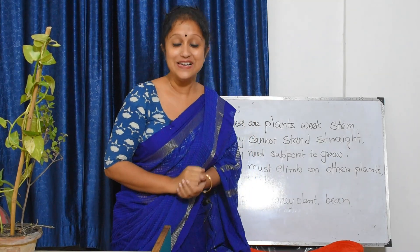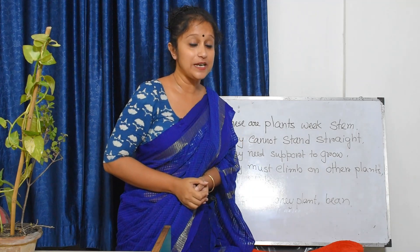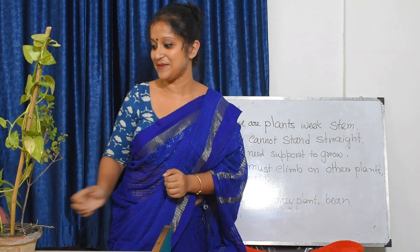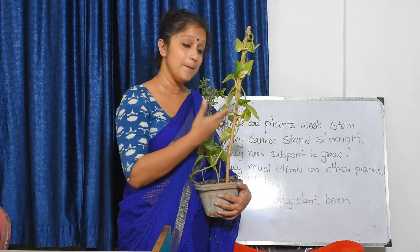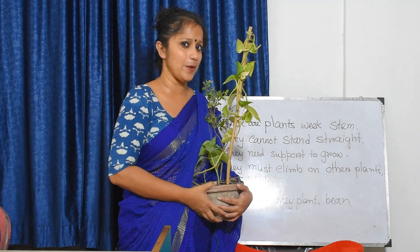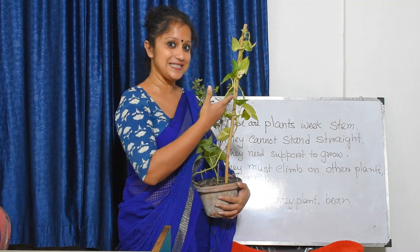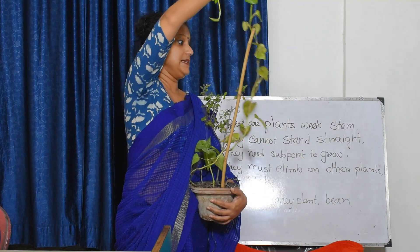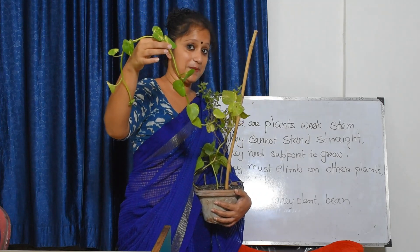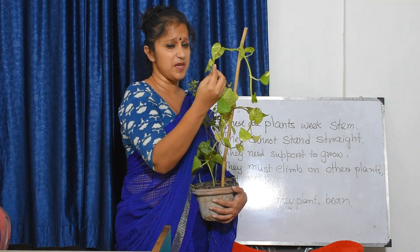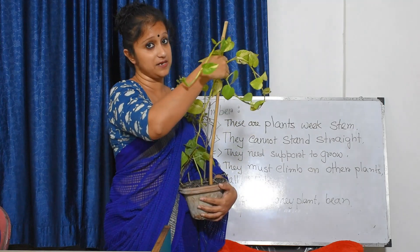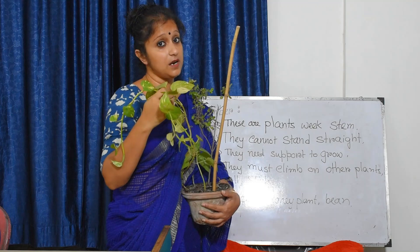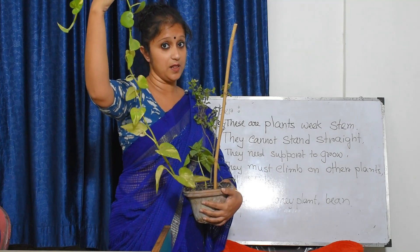You know, the plant also climbs up. Do you know which plant does this? This is the money plant. Maybe you have seen it. This is the money plant. This is the stem of the money plant — the stem is so weak, and they cannot stand straight. This type of plant cannot stand straight without any help.